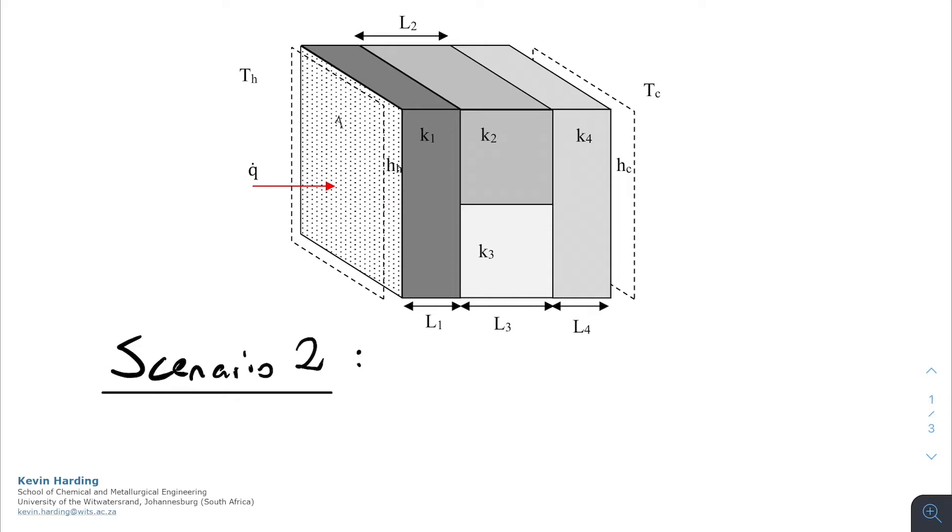Is if we assume that the surface is parallel to the heat flow, so that is the surface there, is adiabatic. So that means that no heat is going to flow through that line between slab two and slab three.